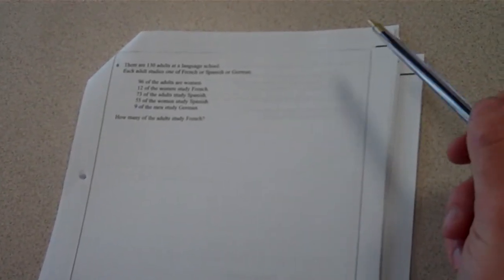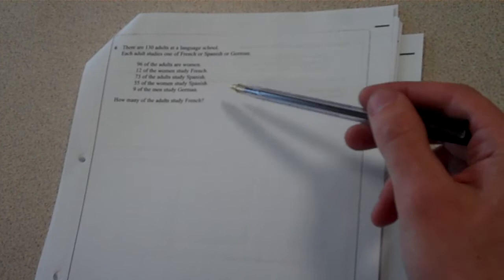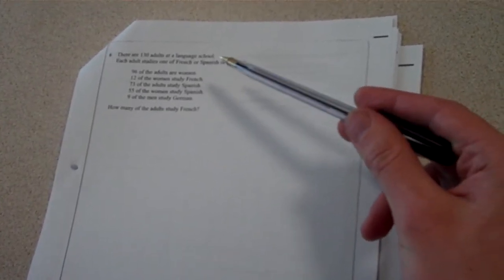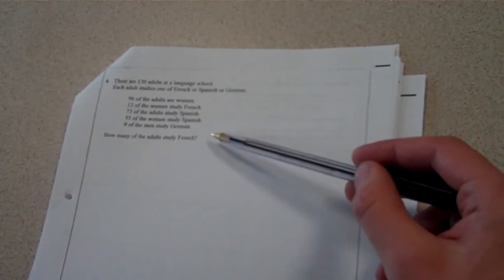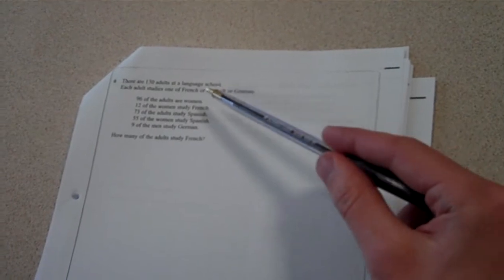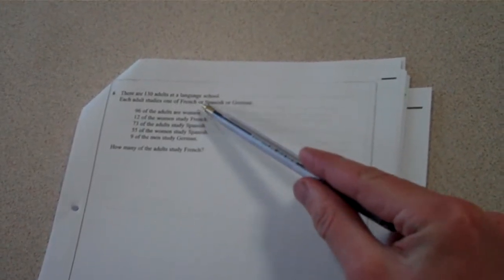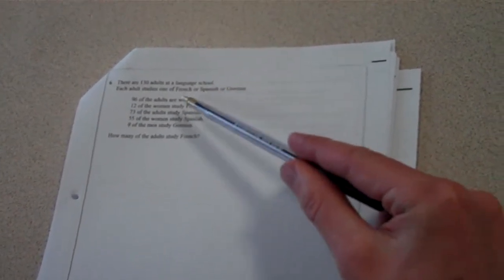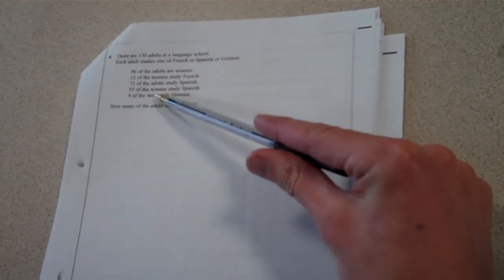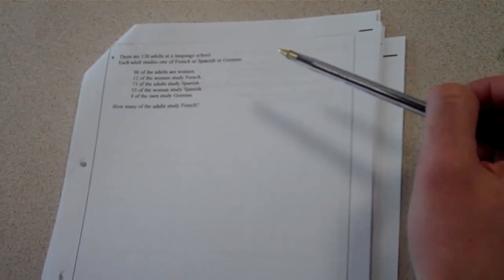Right, so when I first look at this question here, I can just see an abundance of information, which is a bit concerning, first of all, if you don't know how to approach it. All sorts of things. We've got different languages, French, Spanish or German. And we've got adults, as in men and women, different information.